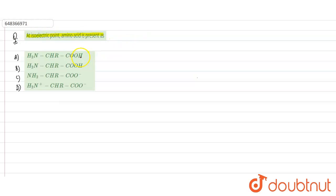In this question, four options are given and we have to select that whenever amino acid reaches isoelectric point, it shows which kind of representation.